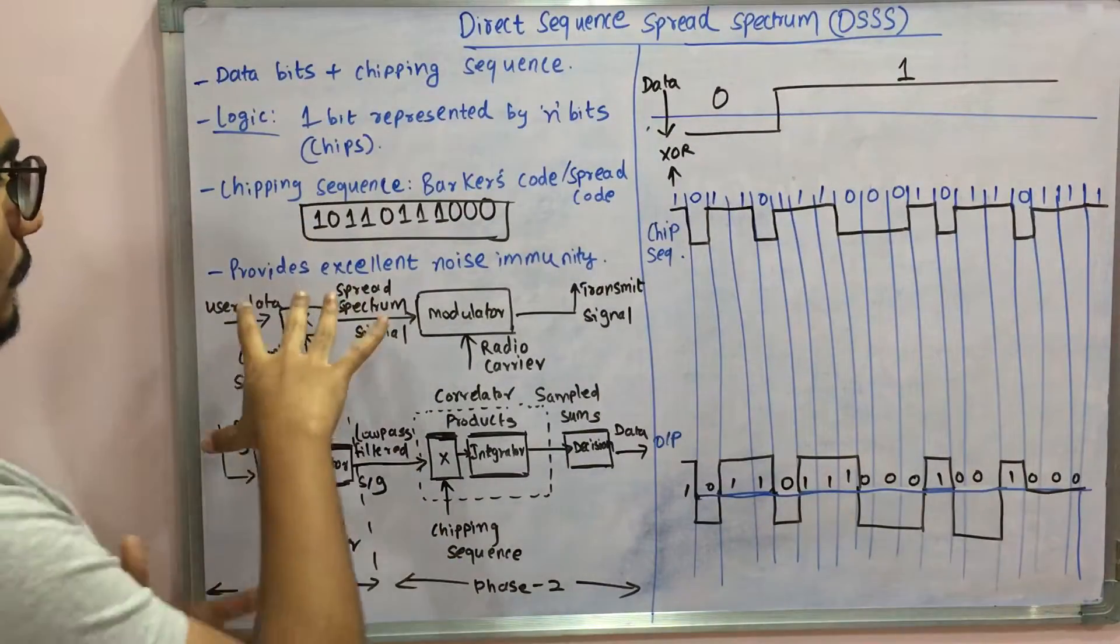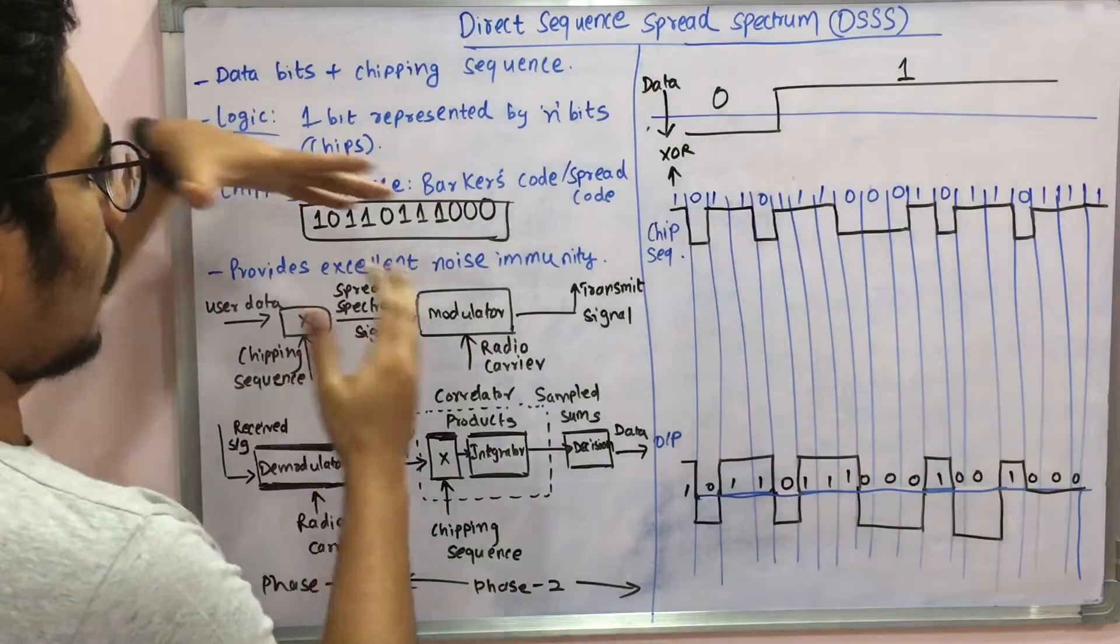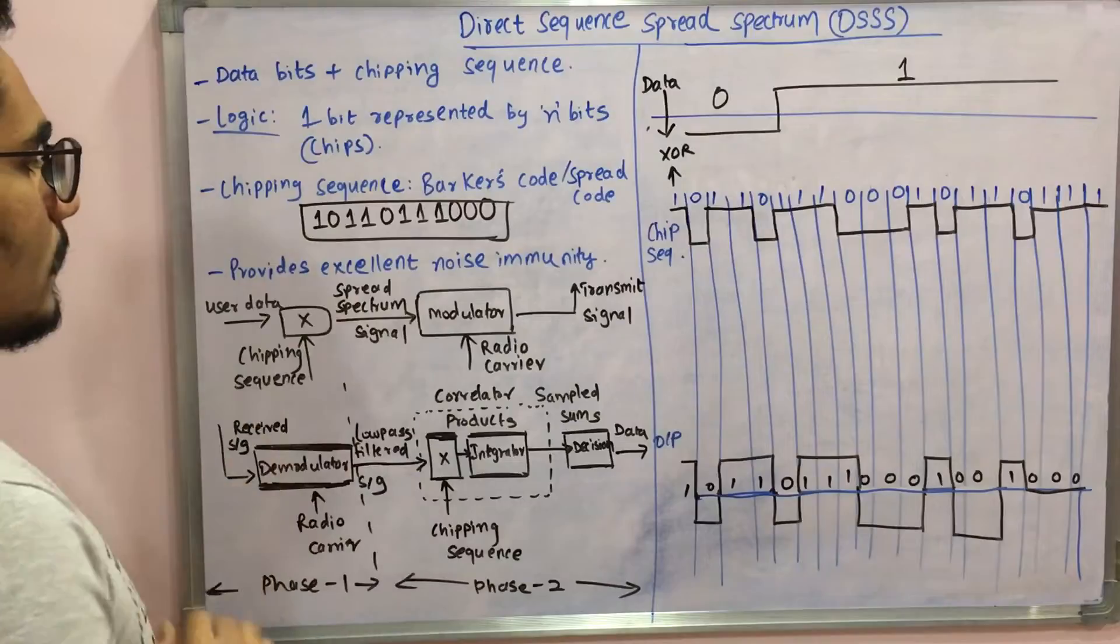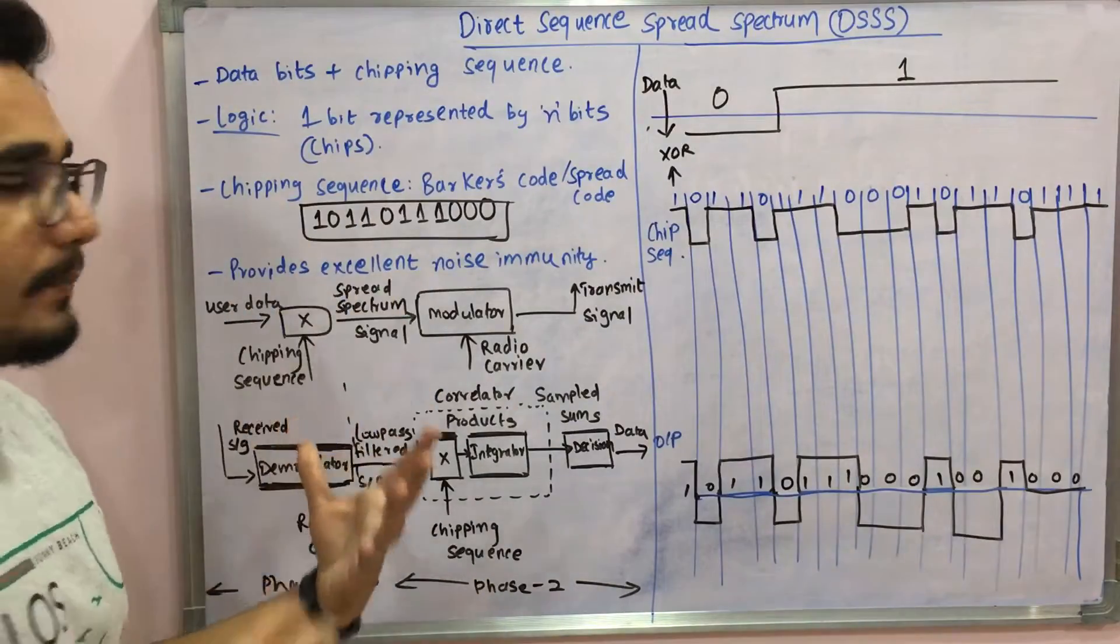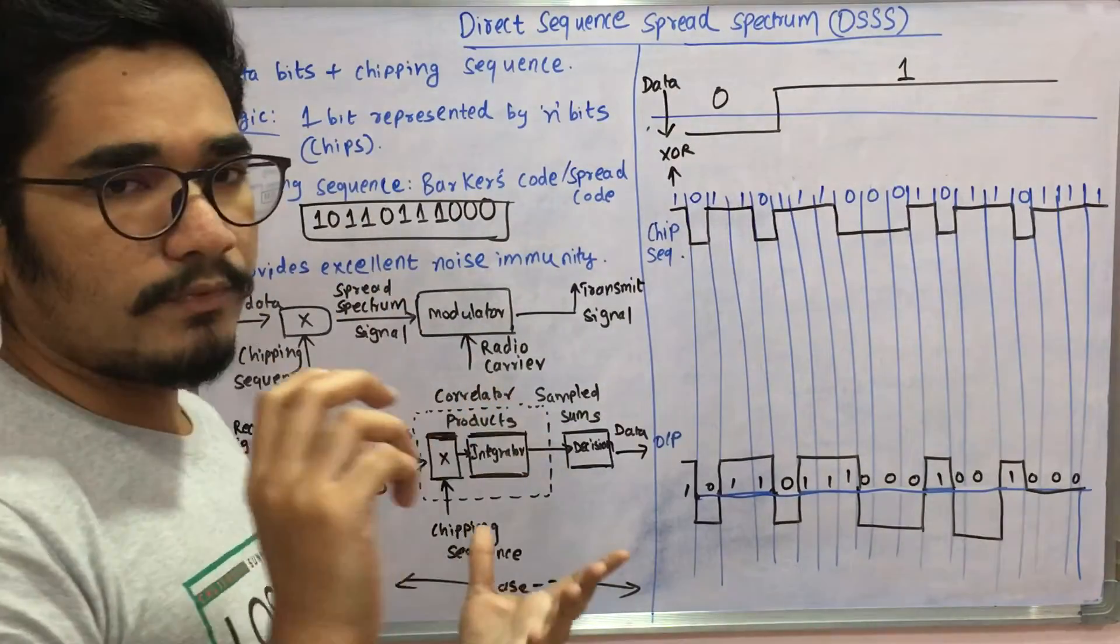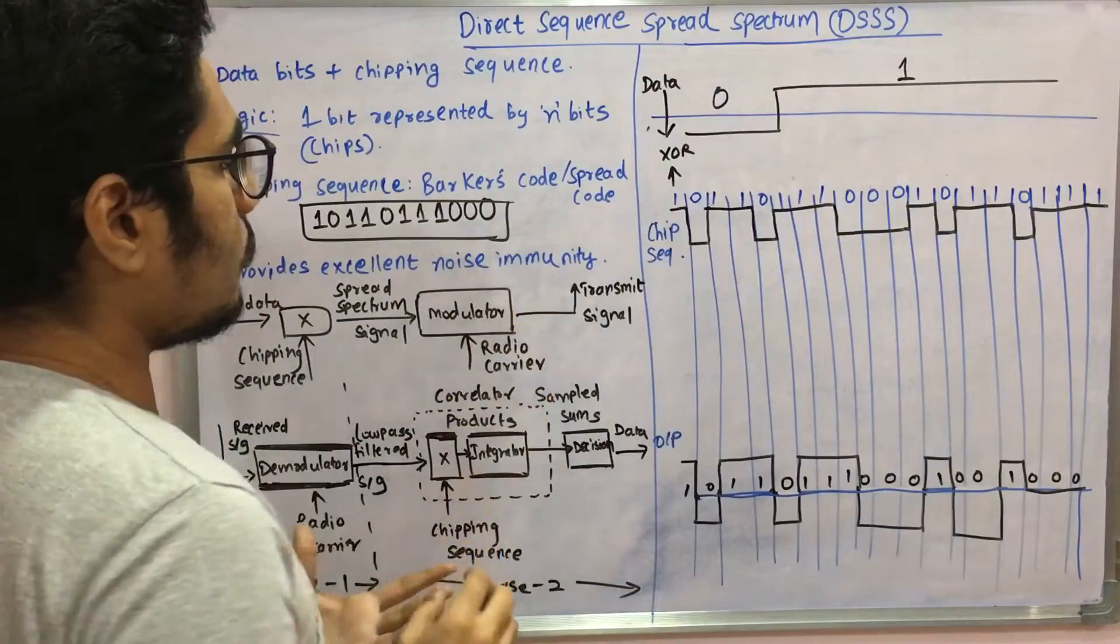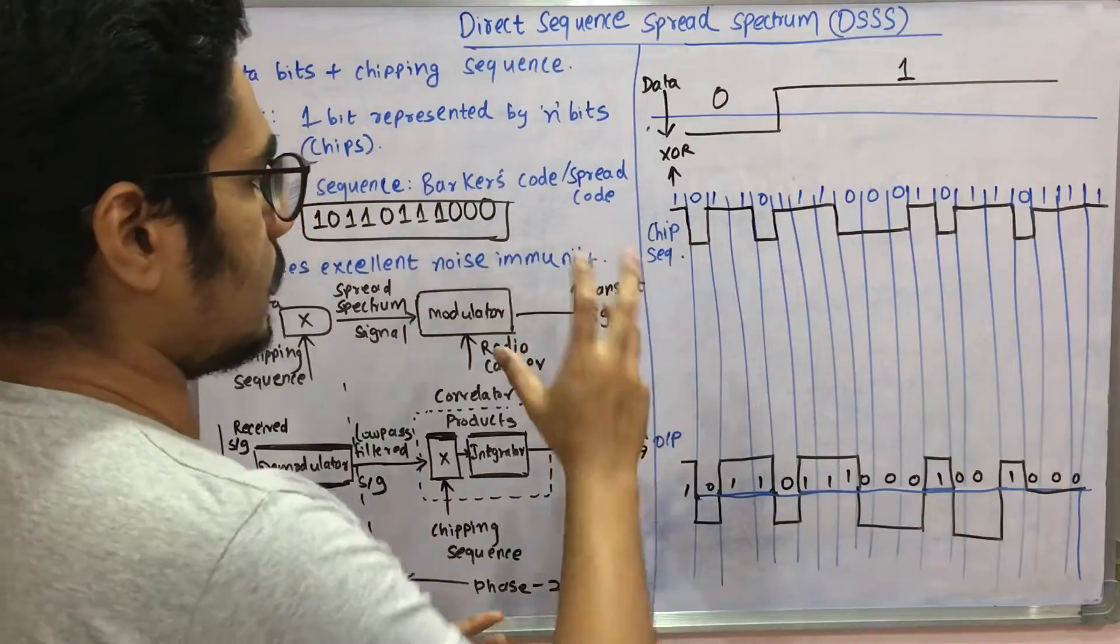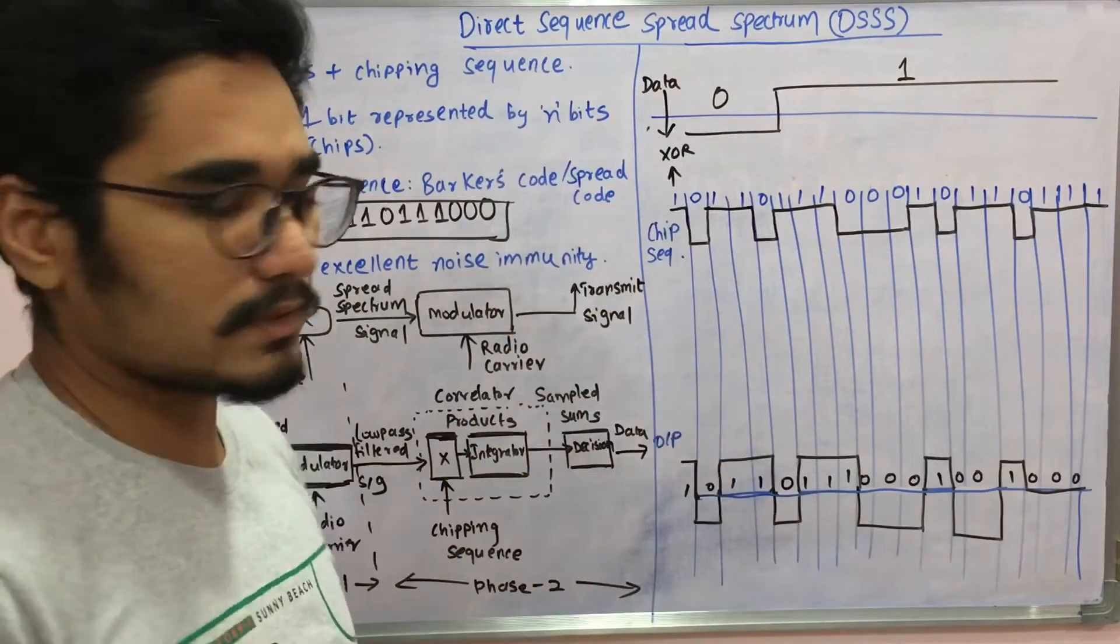It's represented by X for representational purposes. Then you have the modulator kept after that, so the resultant creates a spread spectrum signal. That spread signal is applied to the modulator, then you have a radio carrier, and that radio carrier along with the spread signal will generate the original signal. The signal is transmitted.